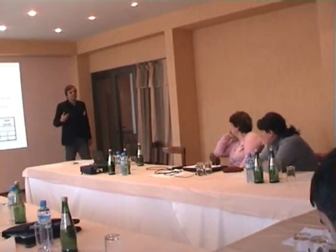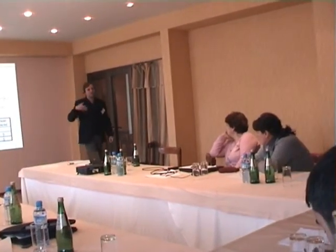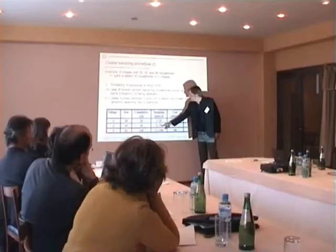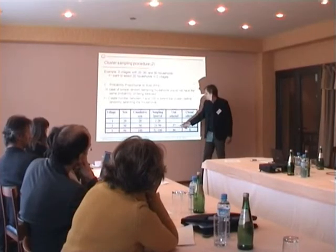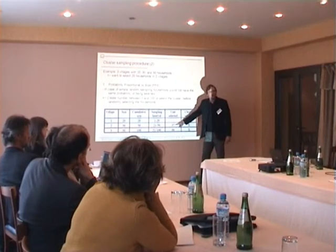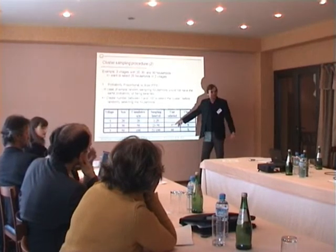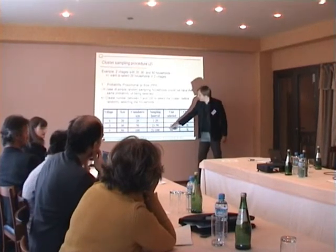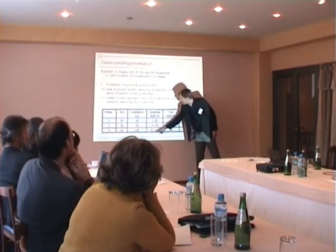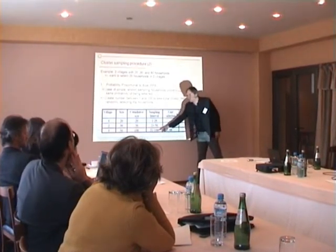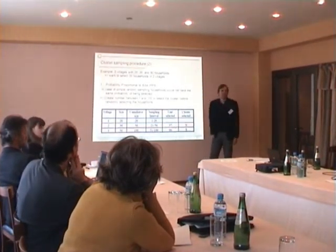This is the random number we have created. So if we ask Exeter to put 50, we take the second village. If it's between 51 and 100, we take the third village.